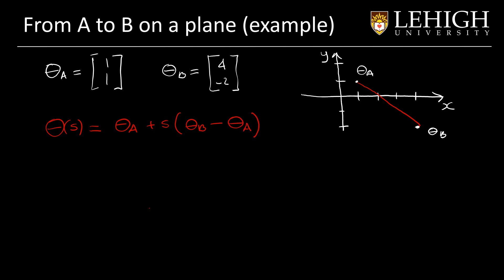We have a point that starts on theta A and it goes to theta B. For that, we have a parameter that is S and goes between 0 and 1.